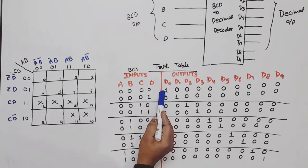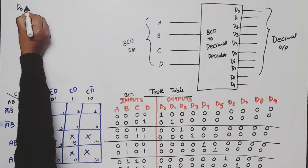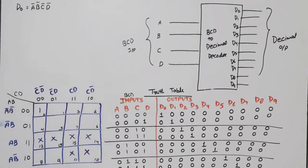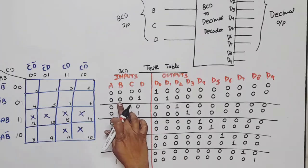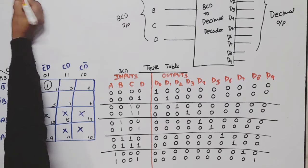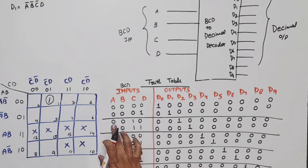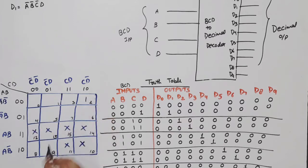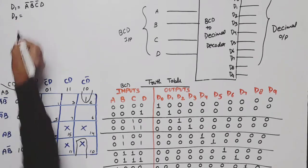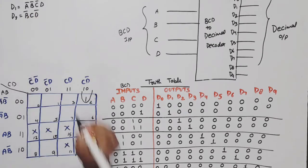Now for D0, the only combination where it is 1 is 0000, so D0 equals A-bar·B-bar·C-bar·D-bar. For D1, the combination is 0001, so D1 equals A-bar·B-bar·C-bar·D. For D2, the combination is 0010. Using the K-map, we can form a pair; B-bar is common. So D2 equals B-bar·C·D-bar.